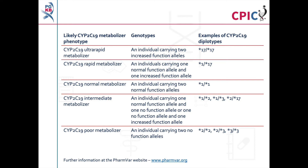Note that as more evidence becomes available, new star alleles can be added, and the functional definition of some star alleles may change. An important caveat for all genotyping tests is that any alleles which are not detected in the assay are designated as star 1. This can include rare increased function, reduced function, and non-functional alleles, which are not routinely screened for in some genotyping tests. Further information about CYP2C19 alleles can also be found at the PharmVar website at www.pharmvar.org. A link to PharmVar is also given in the description below this video.